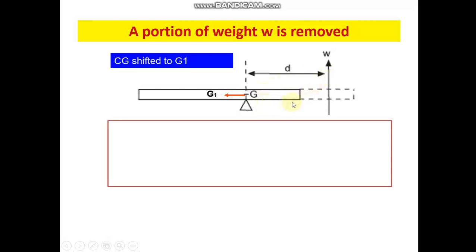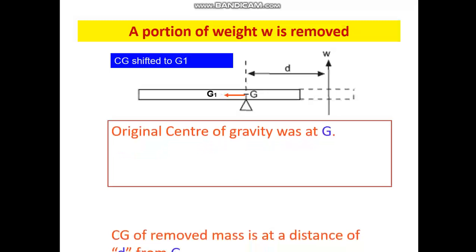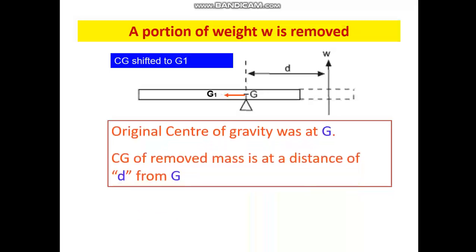Here I have removed a mass small w from this system. The original centre of gravity was at G and because I have removed a small portion, the new centre of gravity will move to G1. The distance d is between the centre of gravity of the old mass and the centre of gravity of the removed portion. That is what we know.